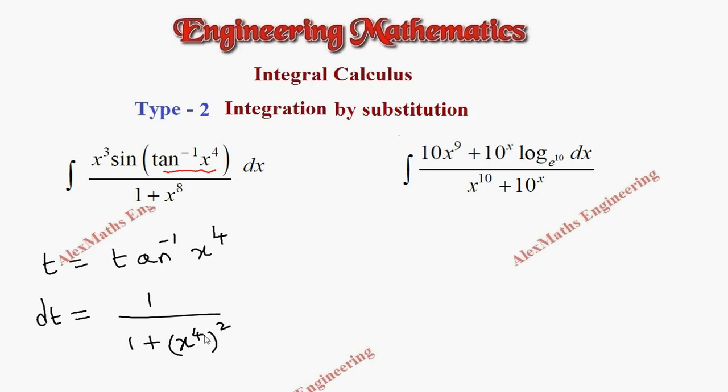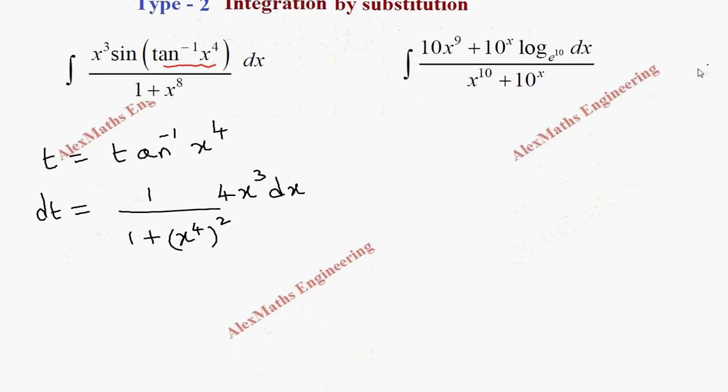When using the chain rule, x power 4 differentiation is 4 x power 3 dx. We follow the chain rule and differentiate. Now we have to rearrange. We have to carry this 4 to the other side.